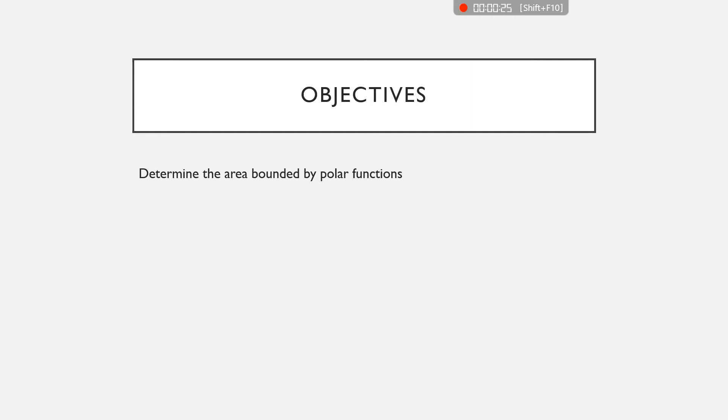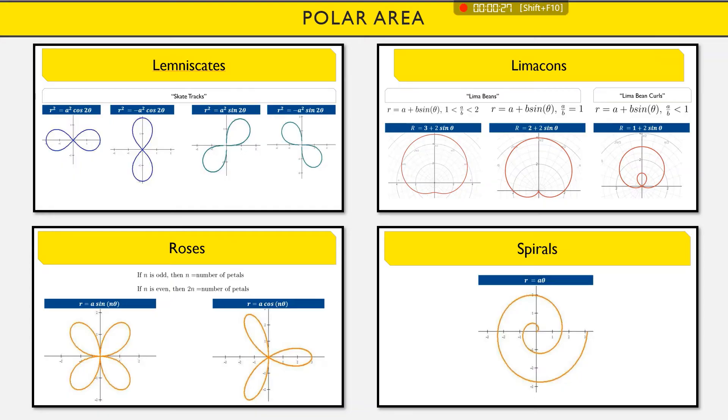So objective is just determine the area bounded by polar functions. So I'm going to really quickly review everything we went through last time. Last time, the only new stuff we had was four different types of shapes. This is really just vocabulary. This is lemniscates, which look like skate tracks or figure eights, limacons, which look like a bean, roses, and spirals.